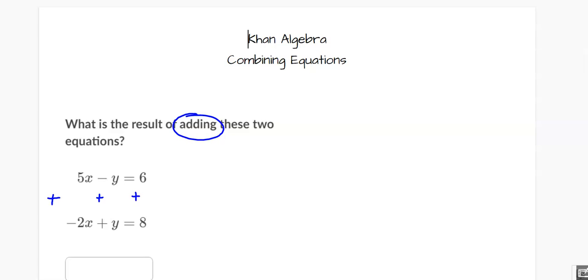So 5x plus a negative 2x, well that's 3x. And then a negative 1y plus a positive 1y, well those are opposites. So negative 1 plus a positive 1, they just equal 0. So I actually don't end up with a y term, which is precisely what I want to have happen when we start using elimination in the next section. And then 6 plus 8 is 14.